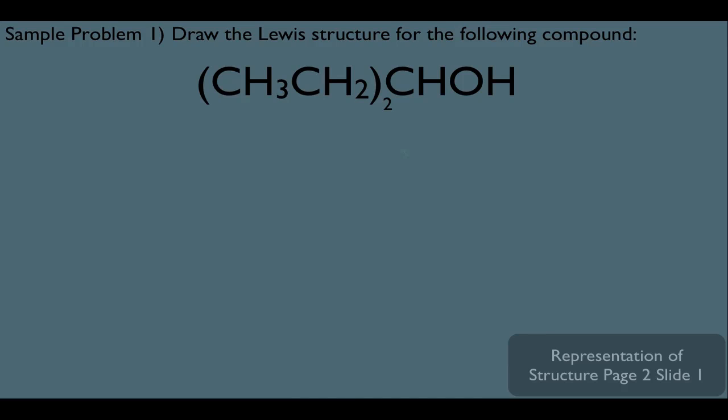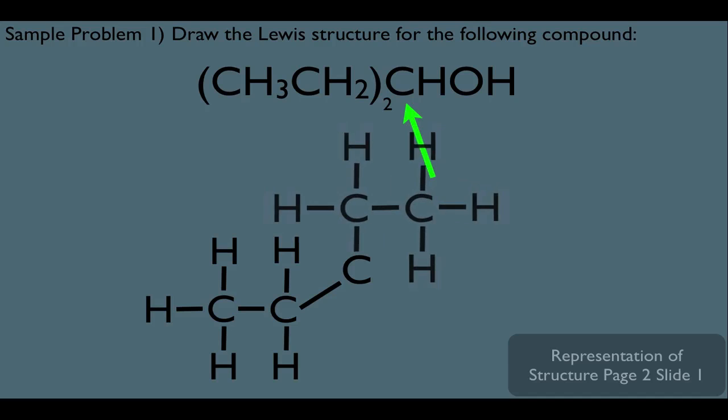So let's start right here with this two. In the parentheses, notice we have two CH3CH2 groups. And what that means to us is that these two groups must be connected to this carbon. So let's start by writing out this carbon here. And let's connect those two CH2CH3 groups right here.